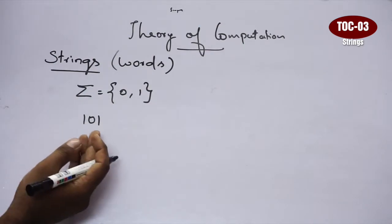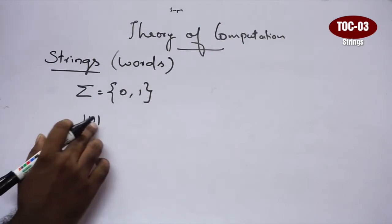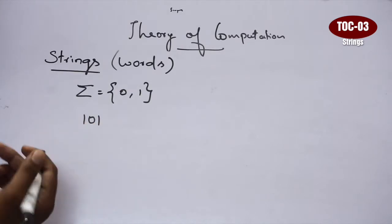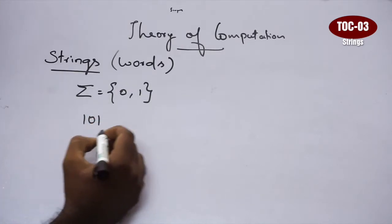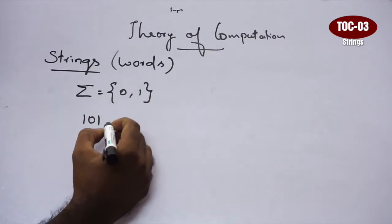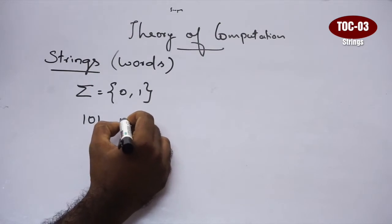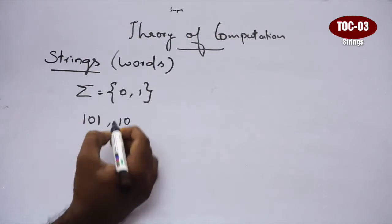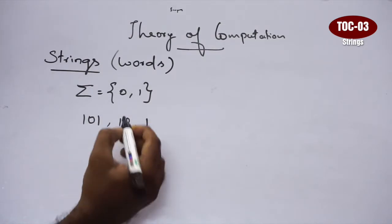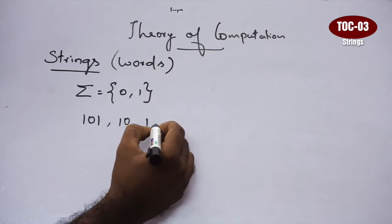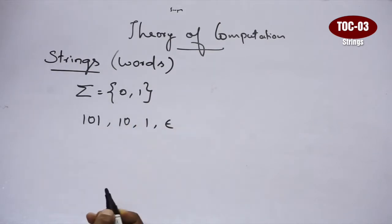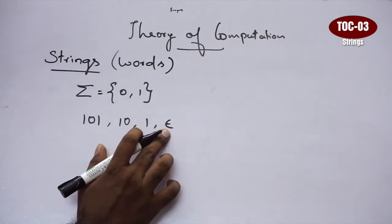This is a string. It's a string of length 3 — 1, 0, 1. We also have a string of length 2, a string of length 1, and if we use epsilon, we have a string of length 0.